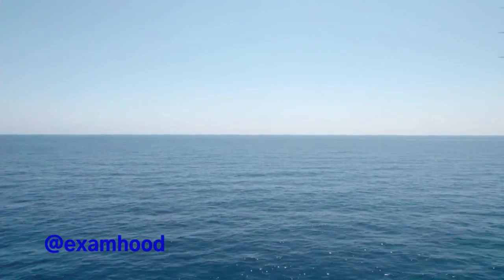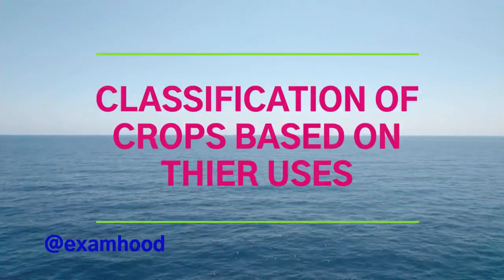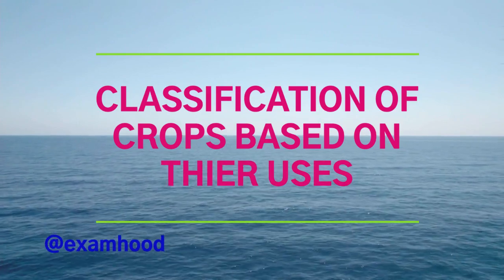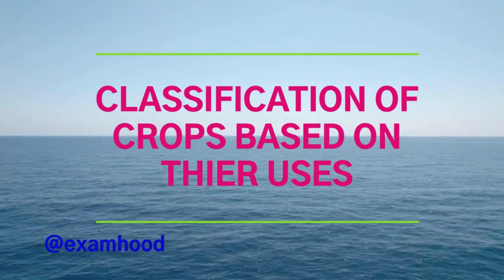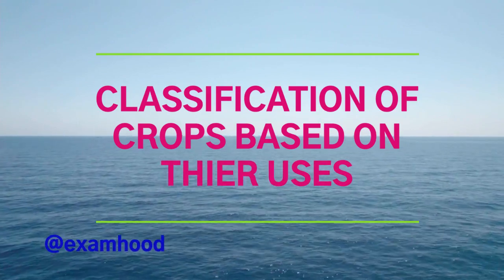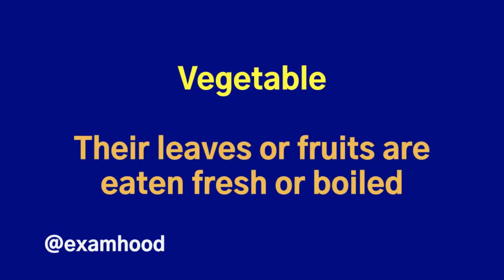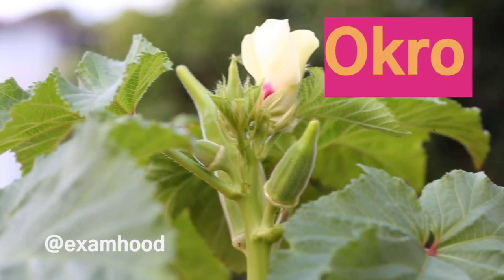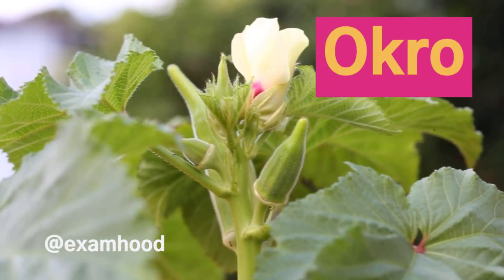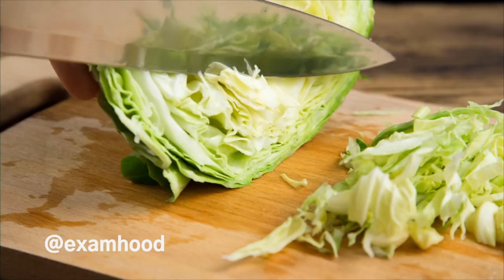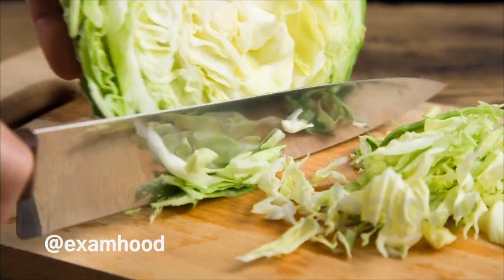In our last lecture we discussed about some of the classifications of crop based on their uses. Today we will be discussing about the rest of the classification. Vegetables — their leaves or fruits are eaten fresh or boiled. Examples include okro and cabbage.